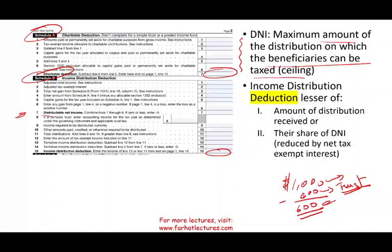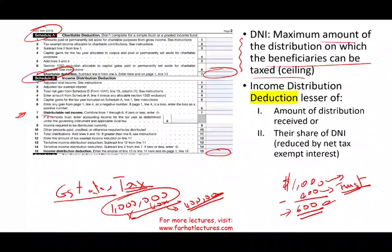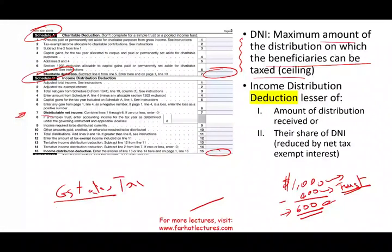The reason that corpus distribution is not taxable: when the person passed away and the estate paid taxes — perhaps around 40% — that money was already taxed. So if it's distributed to you from the corpus, think of it as a return of capital. This is why we compute DNI — to determine the maximum amount on which the individual can actually be taxed.